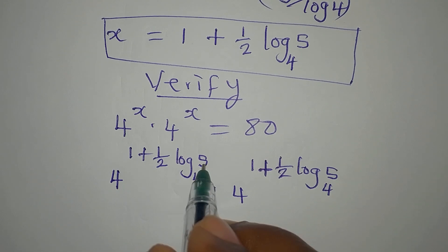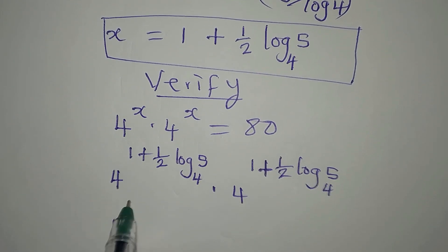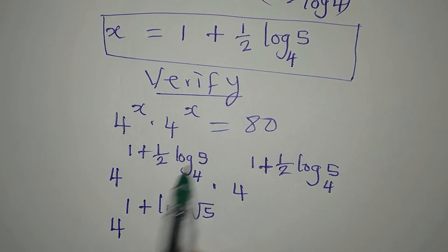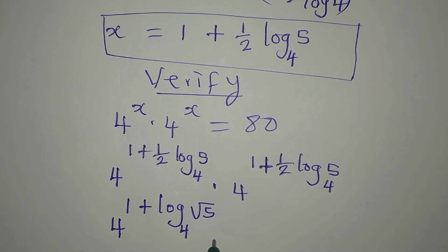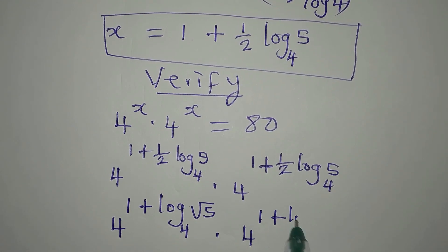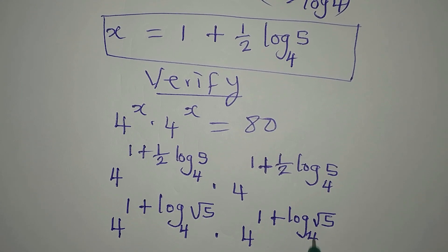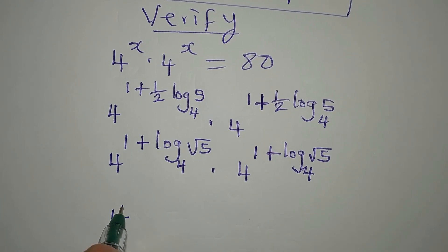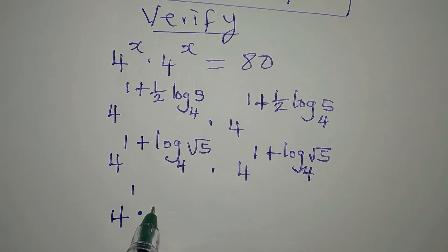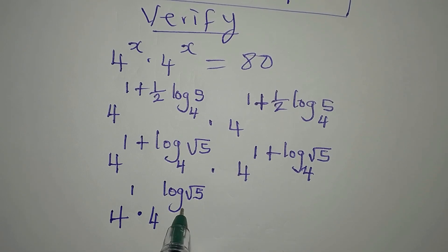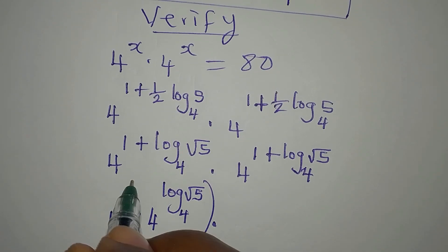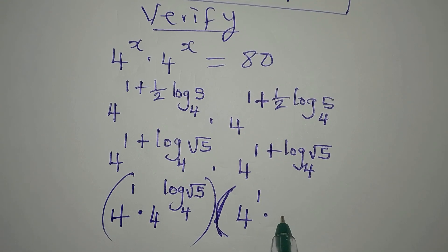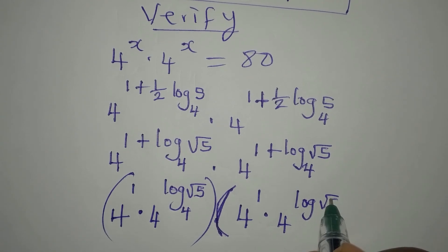Now, do you know that this 1 over 2 is a power to 5? So we can better write this as 4 to the power of 1 plus log square root of 5, because 5 to the power of 1 over 2 is square root of 5 to base 4. Now, you'll realize that everything here is a power to 4. So we can write it using one of the laws of indices. 4 to the power of 1 times 4 to the power of log root 5 over 4, times 4 to the power of 1 times 4 to the power of log root 5 to the base of 4.